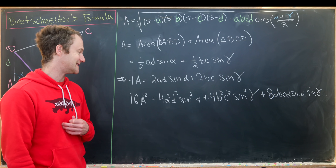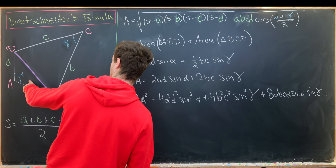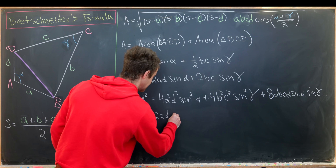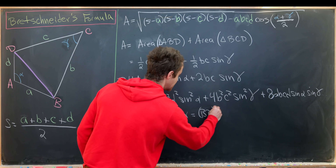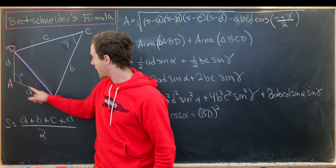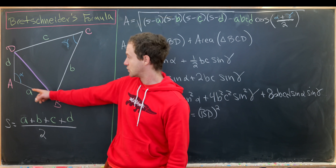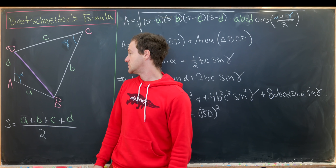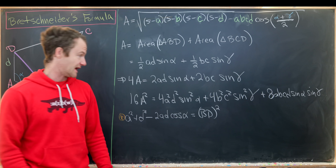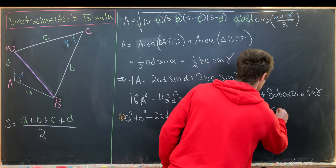Now we'll use the law of cosines to derive an identity to add and subtract from the right-hand side. Applying the law of cosines to triangle ABD gives a² + d² − 2ad·cos(alpha) = BD². Since BD is shared with triangle BCD, applying the law of cosines there gives BD² = b² + c² − 2bc·cos(gamma).